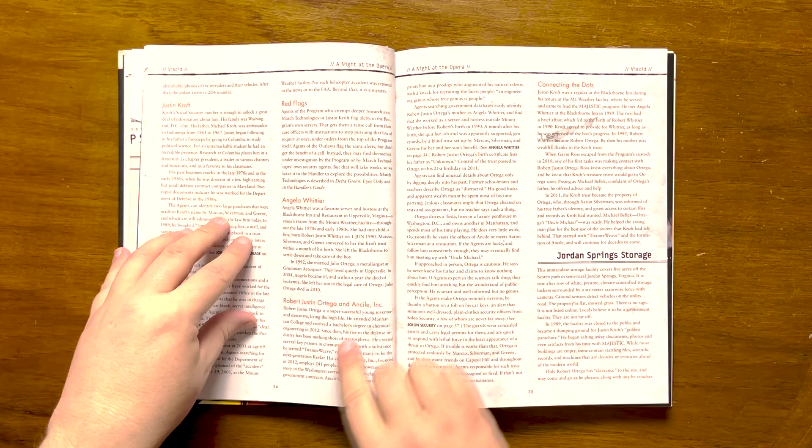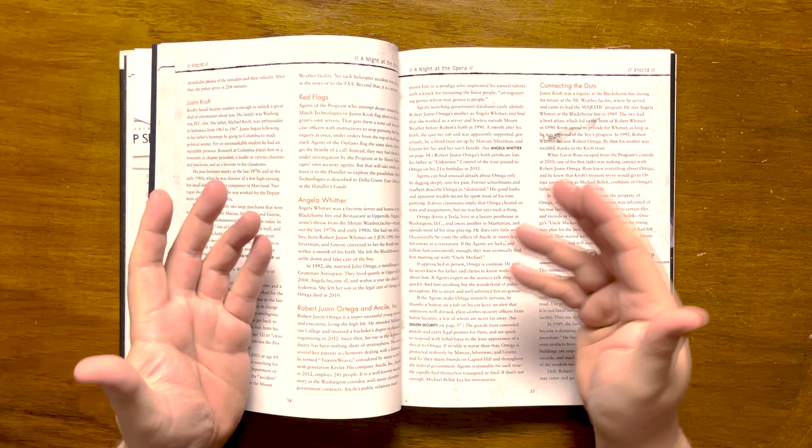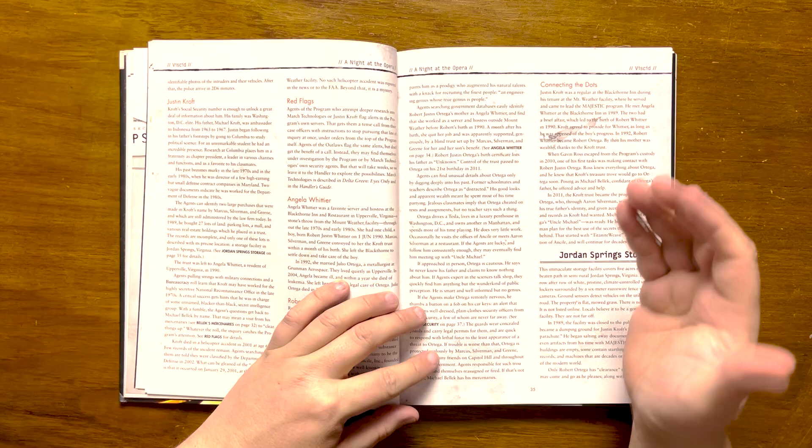It also gives you information on Robert Justin Ortega and Anseelink. Founded in 2012, Anseelink has patented a substance called Titanite Weave, and Ortega is known as an engineering genius. Investigations into him will reveal someone who has a reputation as a genius publicly, but in actuality he is far from it.